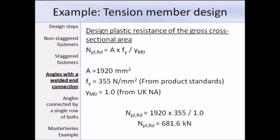So first of all we can work out the design plastic resistance. For that we need to use the gross area, and that is 1920mm² from the section table. The yield strength is 355 N/mm², from the product standards, because the thickness is less than 16mm and we're using grade S355 steel. The partial safety factor recommended by the UK National Annex is 1. So putting those values in, the design plastic resistance works out as 681.6kN.